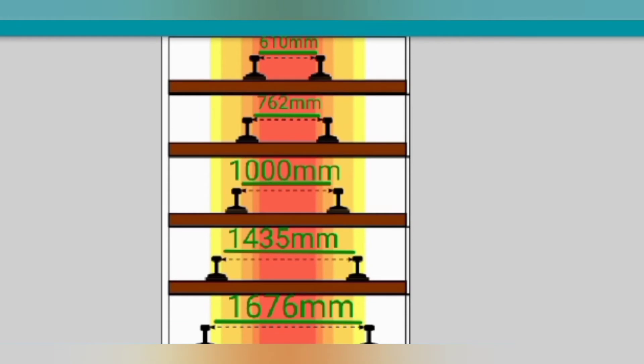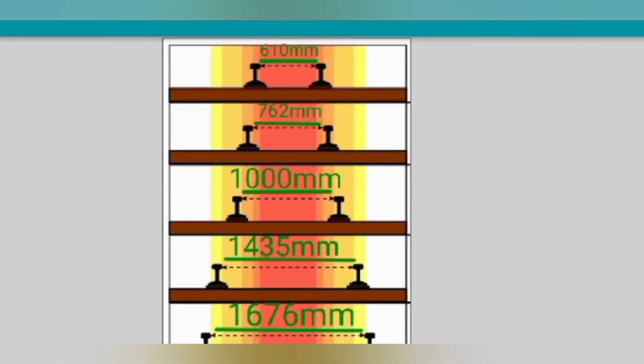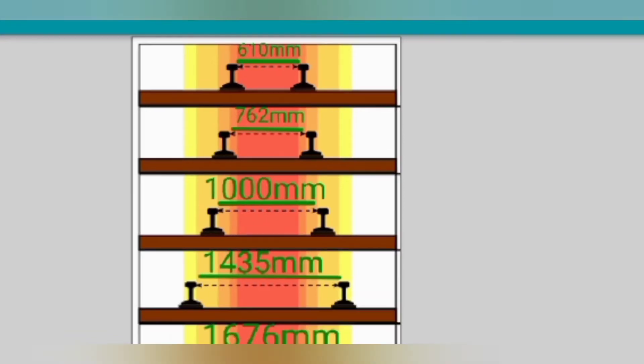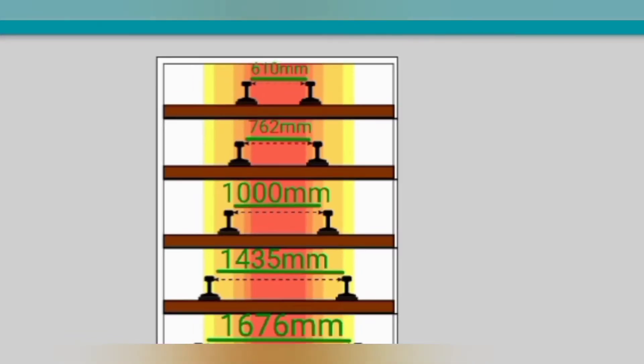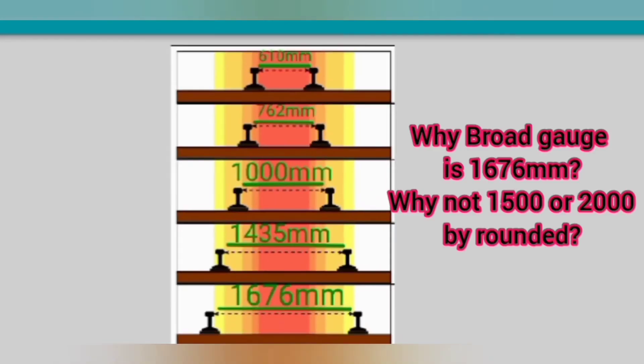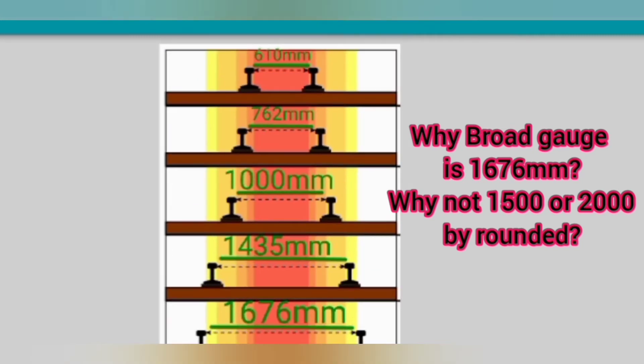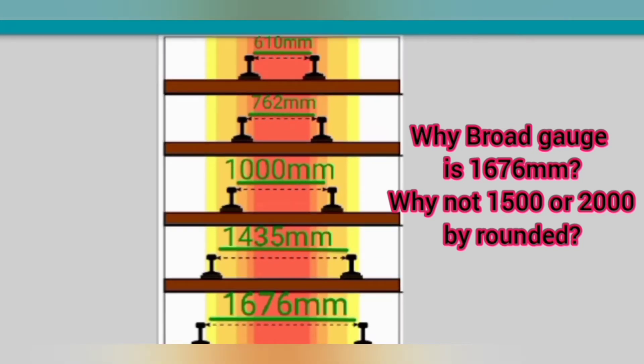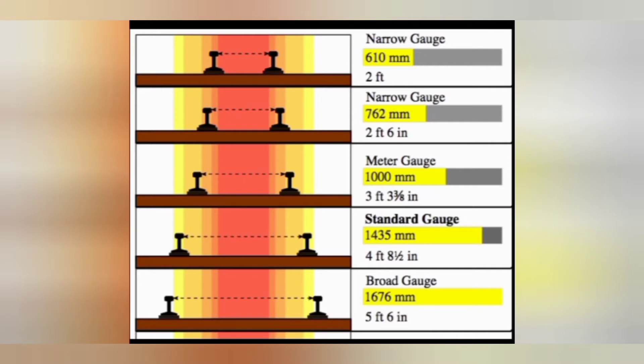Here I have a question: only in meter gauge it is 1000 mm, correctly it is one meter, and why it is not rounded amount? For example, in narrow gauge, why it is not 600 by rounded amount, why it is 610? And also in broad gauge, why it is 1676 mm? Why it is not 1500 or 2000 by rounded amount?